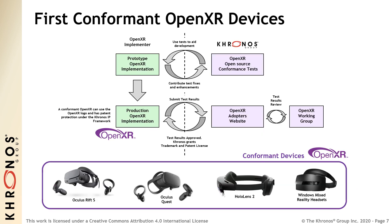Khronos released the full OpenXR conformance test suite into open source earlier in July. Khronos welcomes anyone implementing the OpenXR API to use the conformance tests at no cost to aid in their development. Khronos also released the formal OpenXR adopters program this month. This program enables OpenXR implementers to submit their conformance testing results for working group review, and if their implementation is conformant, they are enabled to use the OpenXR logo and trademark and enjoy the protection of the Khronos IP framework, where no Khronos member will assert their patents against the use of OpenXR technology. The OpenXR adopter program ensures consistent implementation quality and application portability across multiple OpenXR implementations.